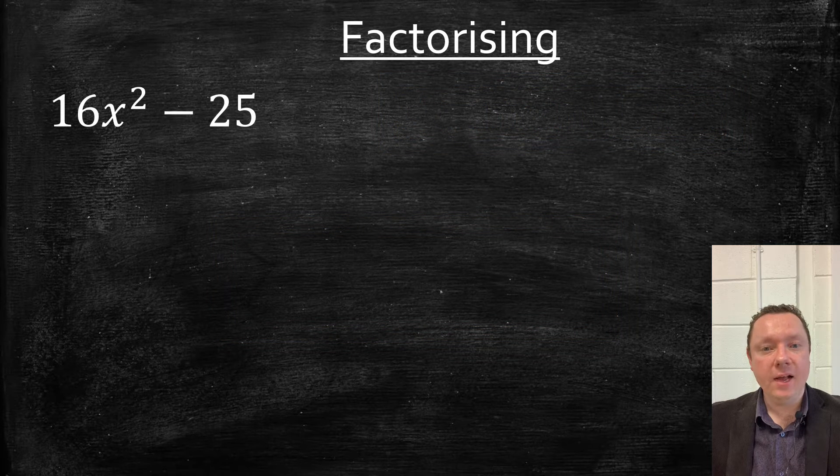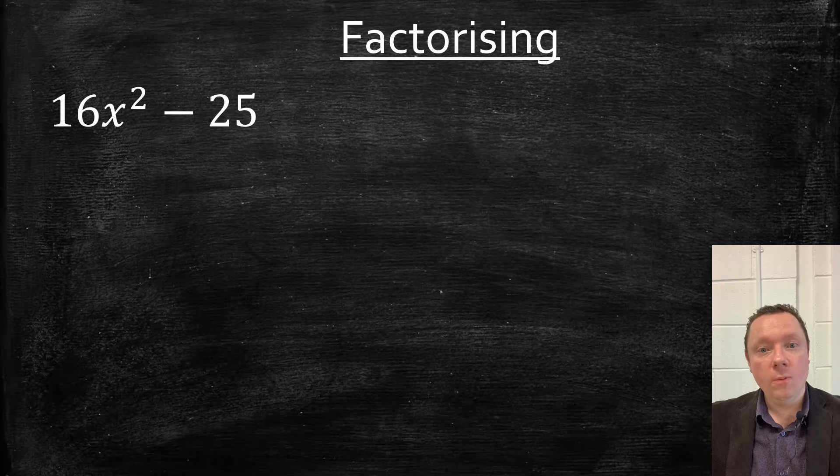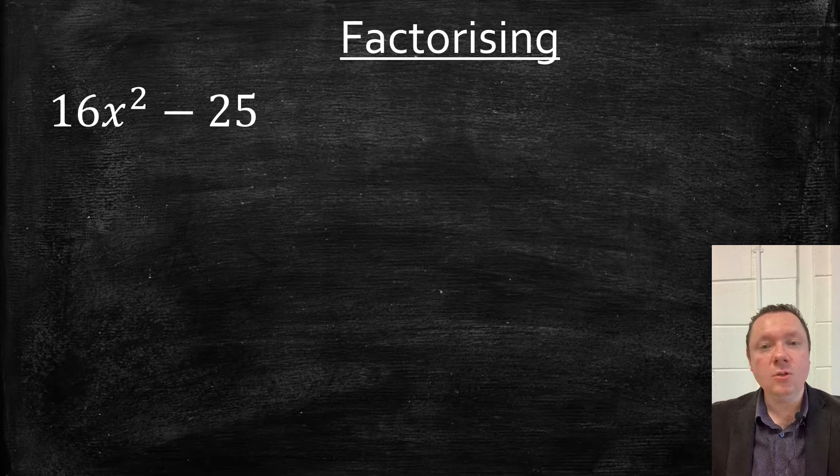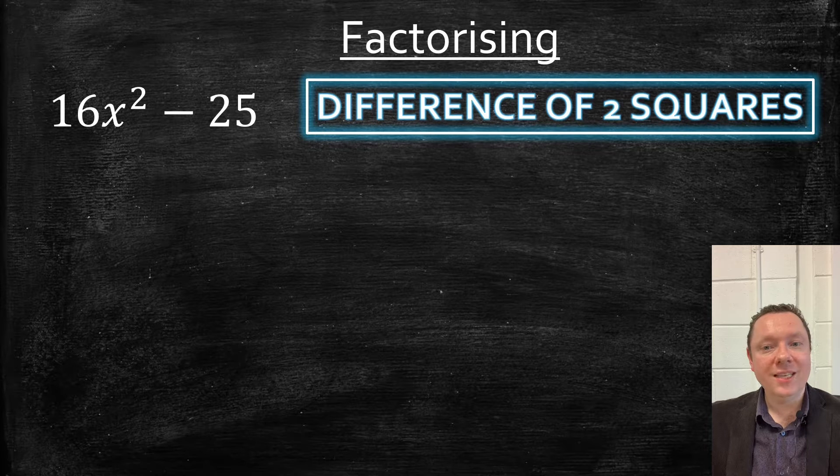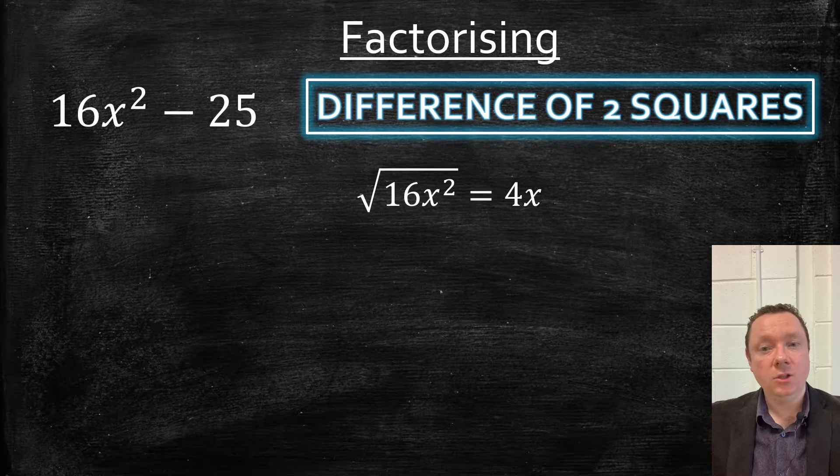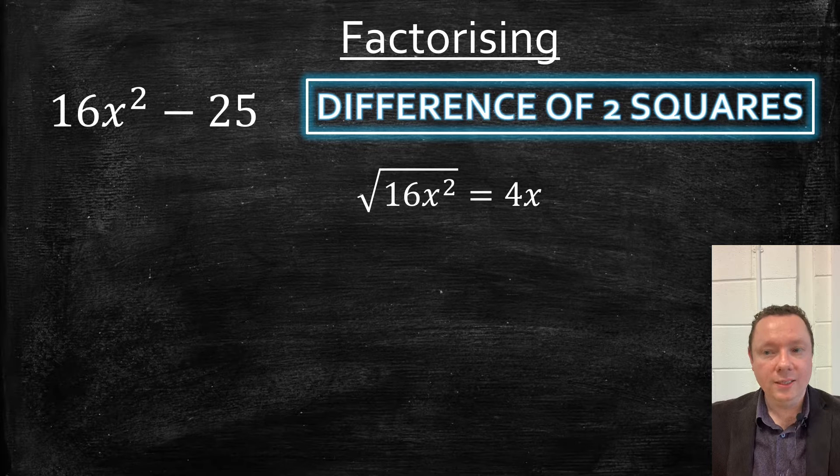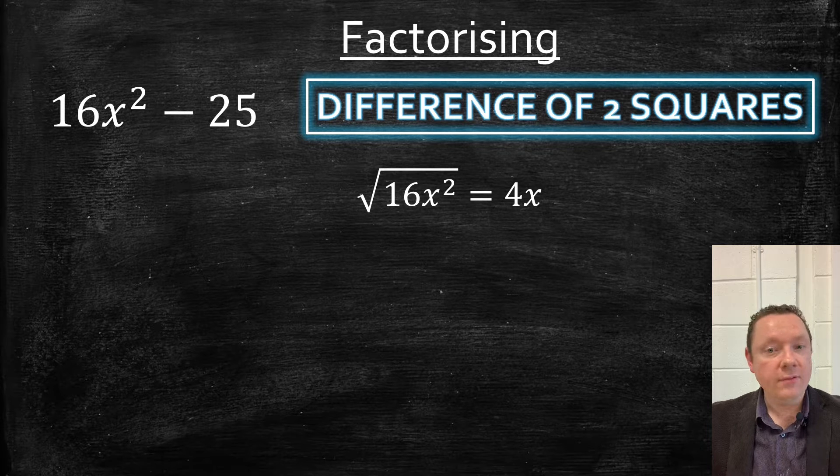16x squared minus 25. No common factors, so it is double brackets. And this one's called a difference of two squares. Square root of 16x squared is 4x. Square root of 16 is 4, x squared is x. And the square root of 25 is, of course, 5.